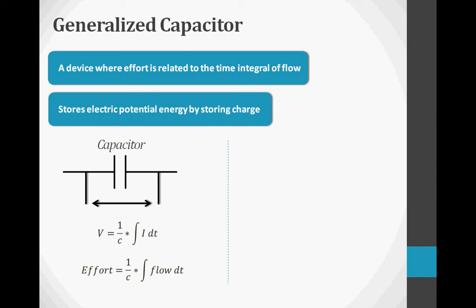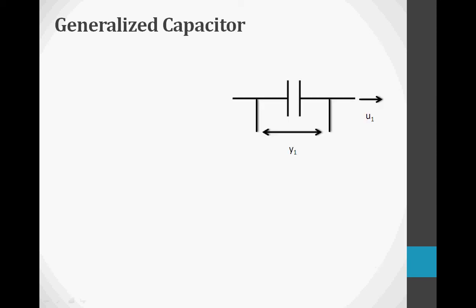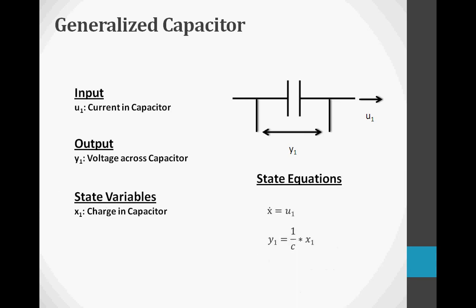The effort variable, voltage, is the time integral of the flow variable, current. In a mechanical system, the generalized capacitor is a spring — the effort variable, force, is the time integral of displacement. In an electrical system, the state variable X1 is the charge in the capacitor. The input, U1, is the current through the capacitor. Then X dot equals U1. The output, Y1, is the voltage across the capacitor, which equals 1 over C times X1.